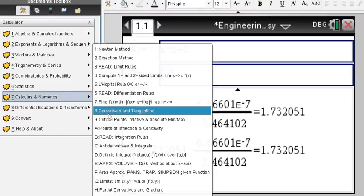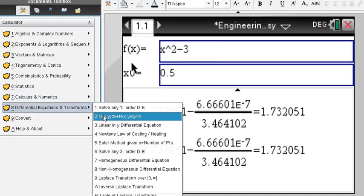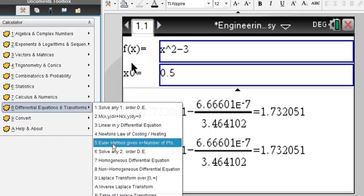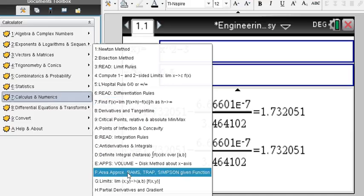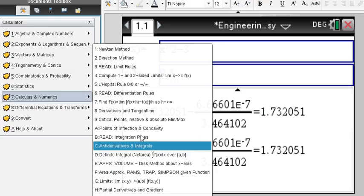What else is numerical here? It is the Euler method here in differential equation. That is part of numerical methods. And also, of course, RAMS, the Rectangular Area Approximation Trapezoid-Simpson rules. All of this can be done here, step by step by step.